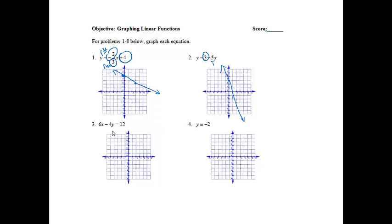Number 3, I have 6x minus 4y equals 12. I know on this one I have to solve it for y first, so let me just rewrite this problem.